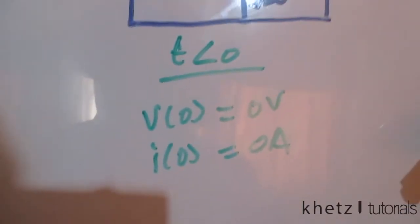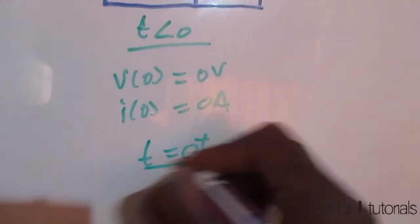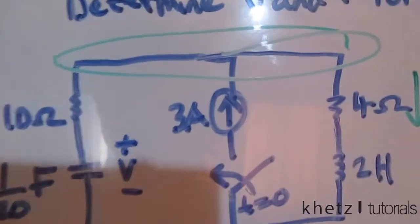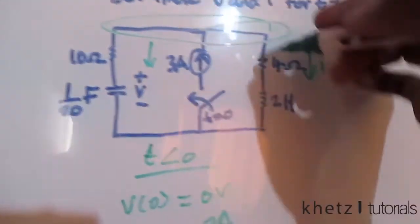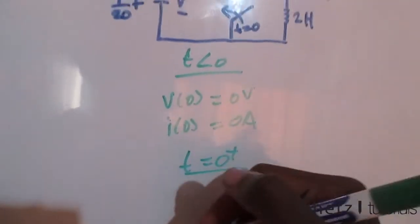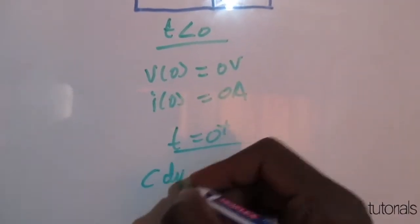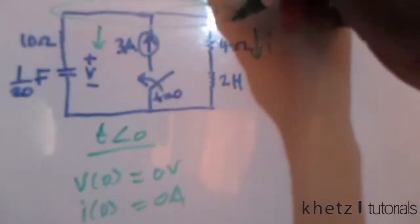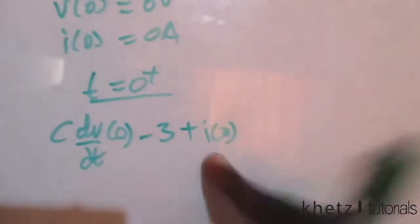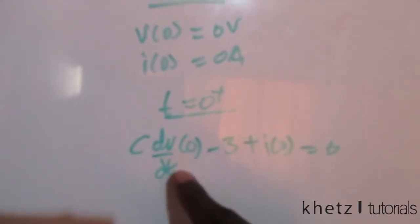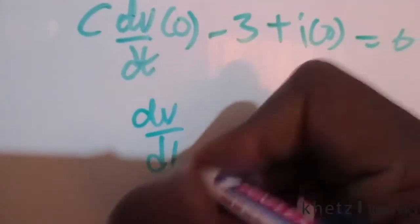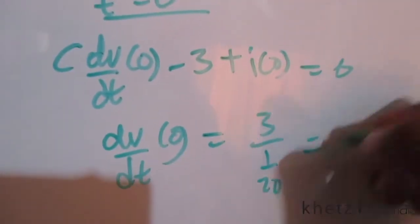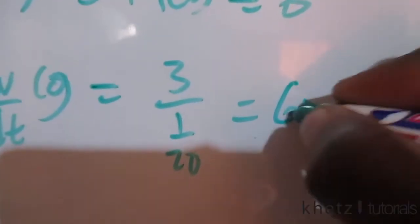We now look at the time just after zero. When the switch is closed, we do KCL at the top node. C·dv/dt at time zero is the current going down that path, and we say negative three, plus the inductor current i(0) which is zero. Rearranging, dv/dt at time zero equals three divided by C, and since C equals 1/20, dv/dt(0) equals 60 volts per second.